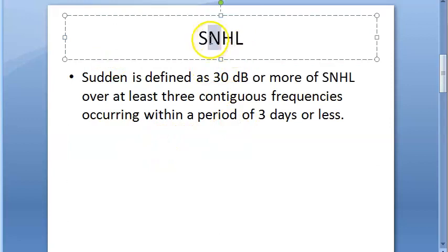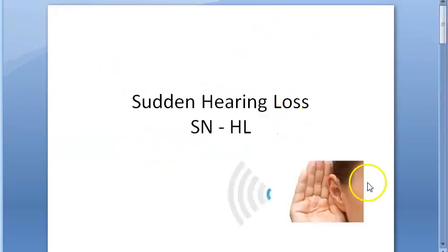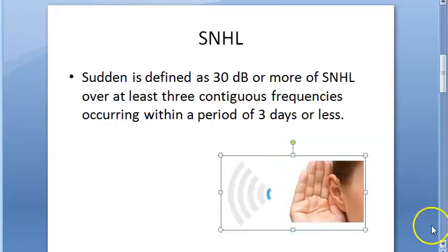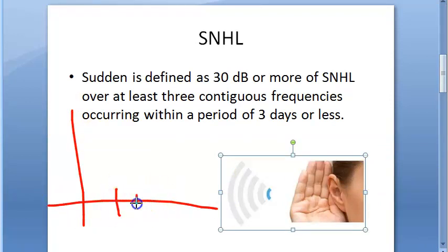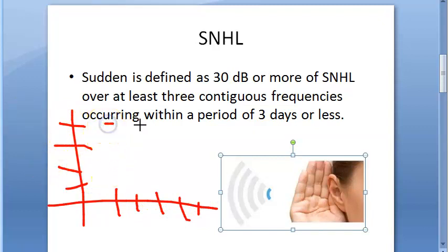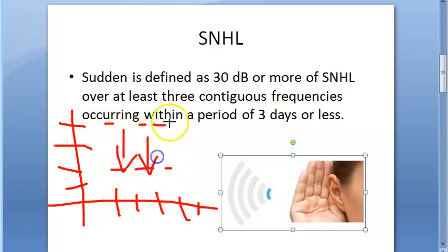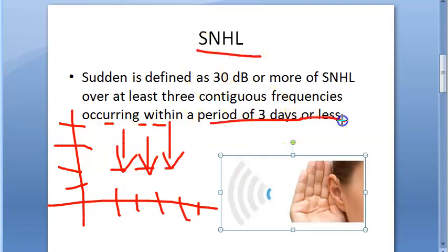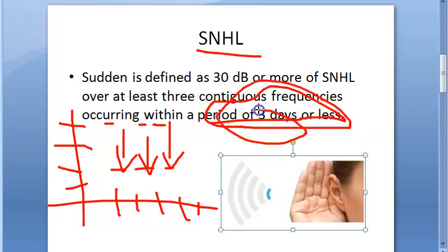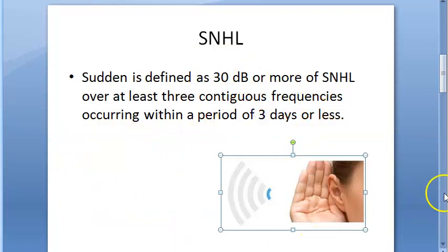If you have seen pure tone audiometry graphs, you will understand: frequencies are plotted on one axis and decibels on the other. The threshold for three continuous frequencies shows a drop of 30 decibels or more, and this all happens within a period of three days or less — that is what makes it sudden hearing loss.